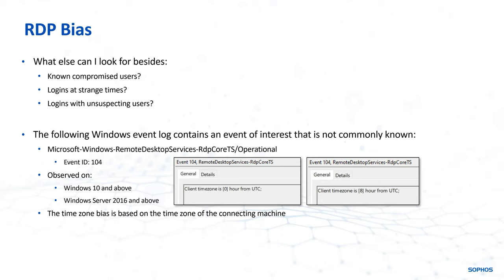That would be a login from an unsuspecting user, or why is someone logging in at 4am when they typically only log in between the hours of 9 and 5? Looking for those typical things is something I'm sure we're all familiar with, but maybe something that's a little less familiar is known as the RDP bias.